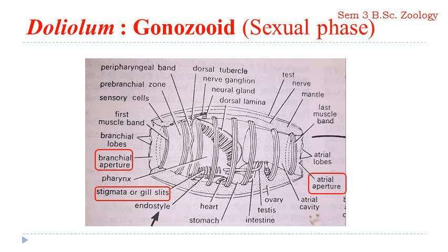Unlike Ascidia, in Doliolum the pharynx — the branchial sac — possesses gill slits, but they are restricted to the posterior part of the pharynx and are very few in number. Apart from that, you can see the dorsal tubercle, nerve ganglia, and neural gland on the dorsal side. On the ventral side you can see the heart positioned very close to the endostyle, on the posterior side of the endostyle. So this is the basic feature of Doliolum.